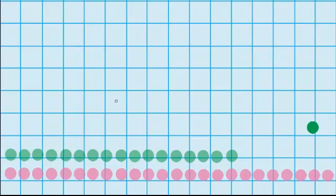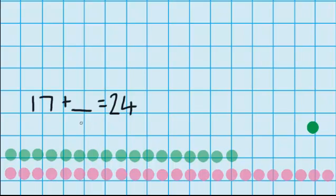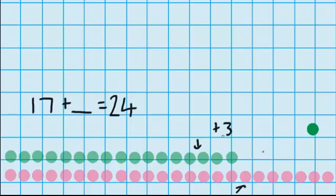Let's try another question. This time I've got 17 counters and I want to get some more counters so that I have the same amount as my friend who has 24 counters. So I'm trying to work out how many more counters do I need to get. I could start by adding on 3 more counters, because that would bring me up to 20, which will make this question a little easier to answer.